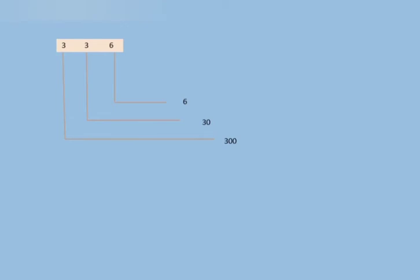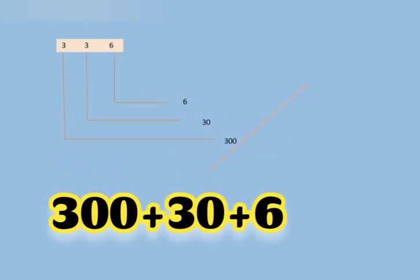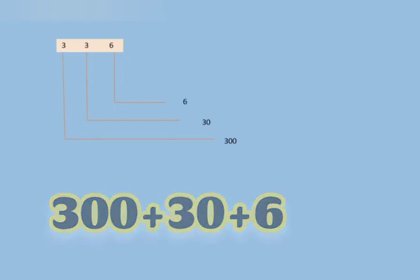Let's take another example. We have 336. 6 is on the 1's place value, this 3 is on the 10's place value, and this 3 is on the 100's place value. So we can write the 100's place 3 as 300, the 10's place 3 as 30, and the 1's place 6 as 6 because we can't change or add any zero to it.